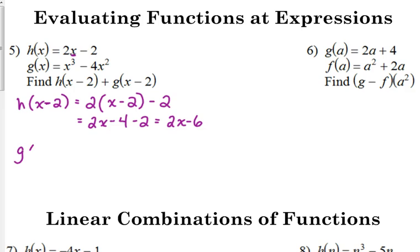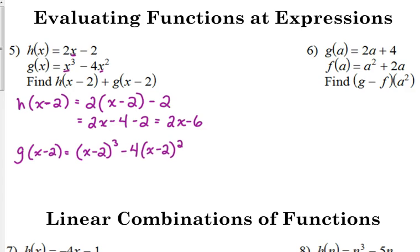G of X minus 2 is going to take a little bit more work, because we replace the X with X minus 2. So it was X cubed, so now it's X minus 2 cubed, minus 4 times X minus 2 squared. Everywhere you see an X, you replace it with X minus 2.